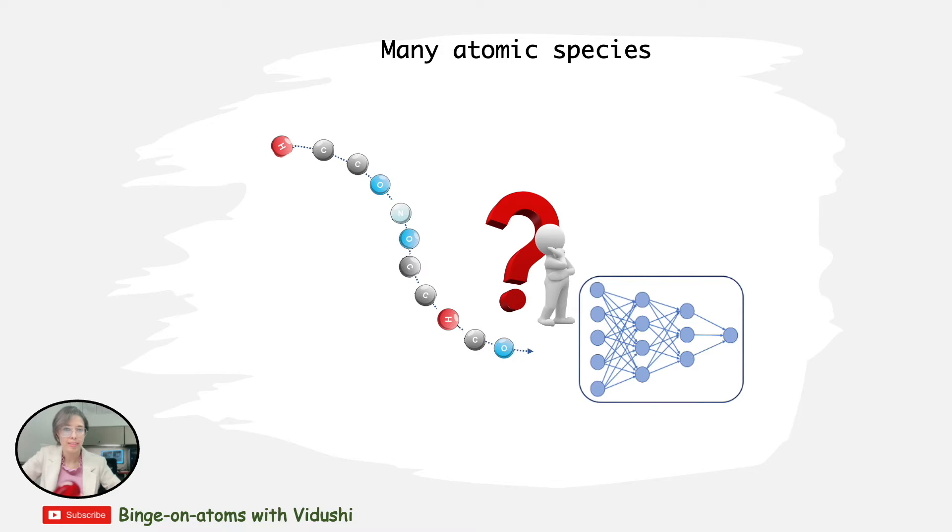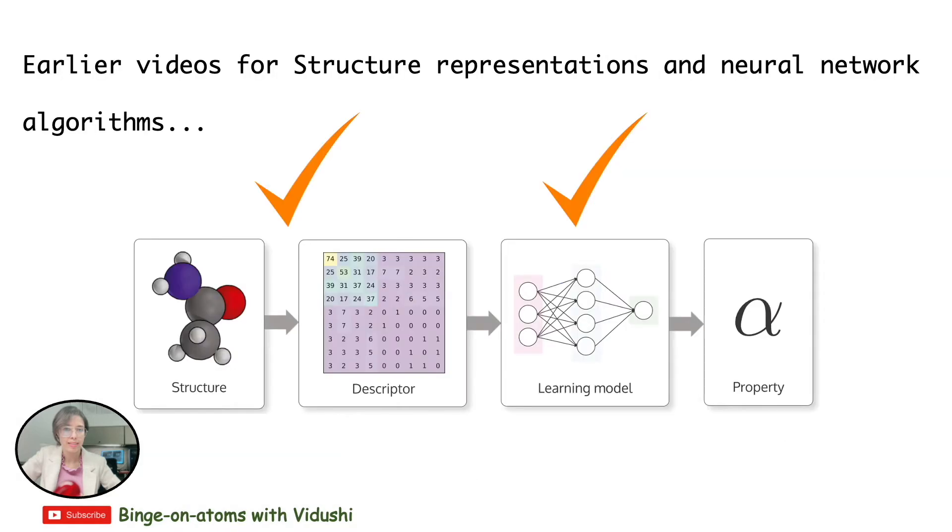As I move forward, I will not explain any deep learning algorithm or descriptor to convert molecular structures as neural network inputs. I have three videos on my channel discussing methods to convert molecular structures to neural network inputs called descriptors and learning models that are commonly used in such problems. Links to these videos are present at the end or in the description section below.